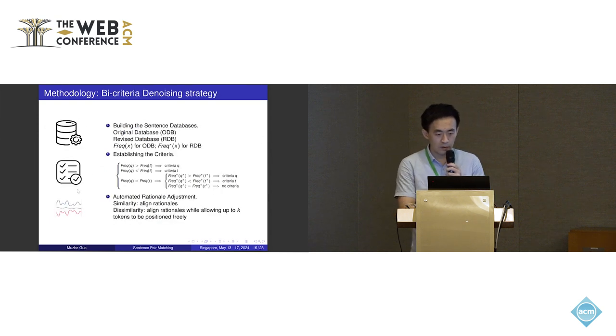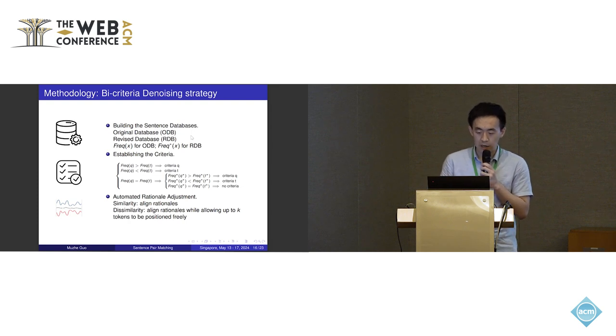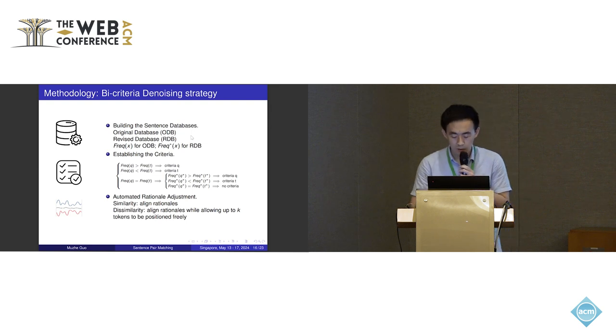And the last one is the denoising strategy. This strategy is optional, and the goal is to enhance the robustness of the interpretation. There are three steps. First, we build the sentence database. Then we establish the criteria based on the frequencies in the sentence database. Finally, we do automated rationale adjustment to make the interpretation of query and title align well.